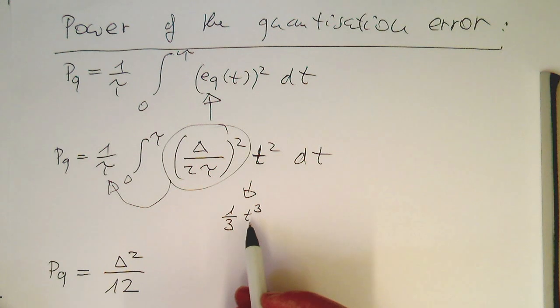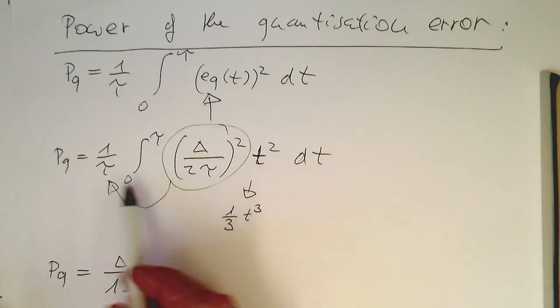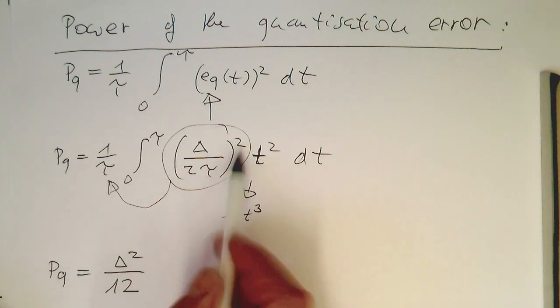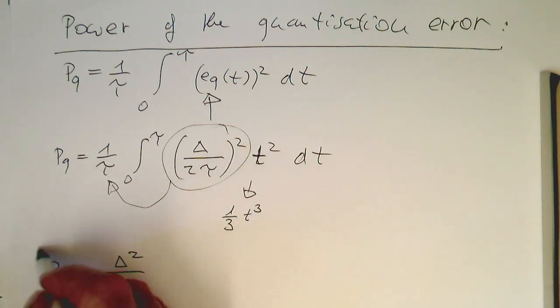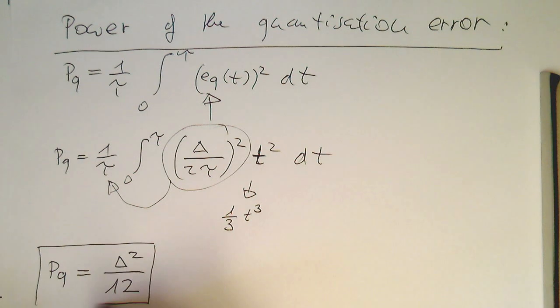Therefore the final result is Delta squared divided by twelve, because the tau resulting from here nicely cancels out with the tau cubed here. This is our power generated by the quantization.